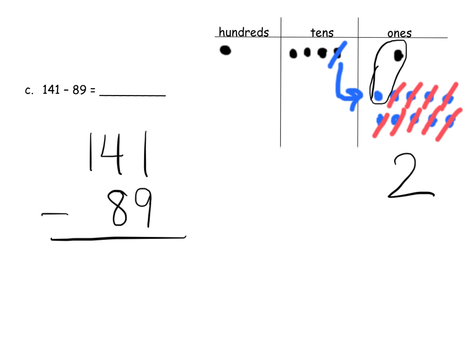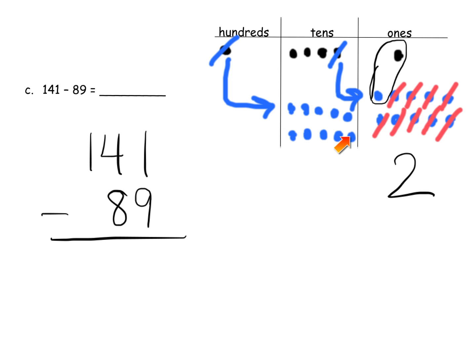And then we have three tens, and we're supposed to take away eight tens. So that means we are going to have to unbundle. We're going to unbundle this hundred and get ten tens. And now we can take away eight — we have 13 tens, we're going to take away eight: one, two, three, four, five, six, seven, eight. And that leaves us with five tens.